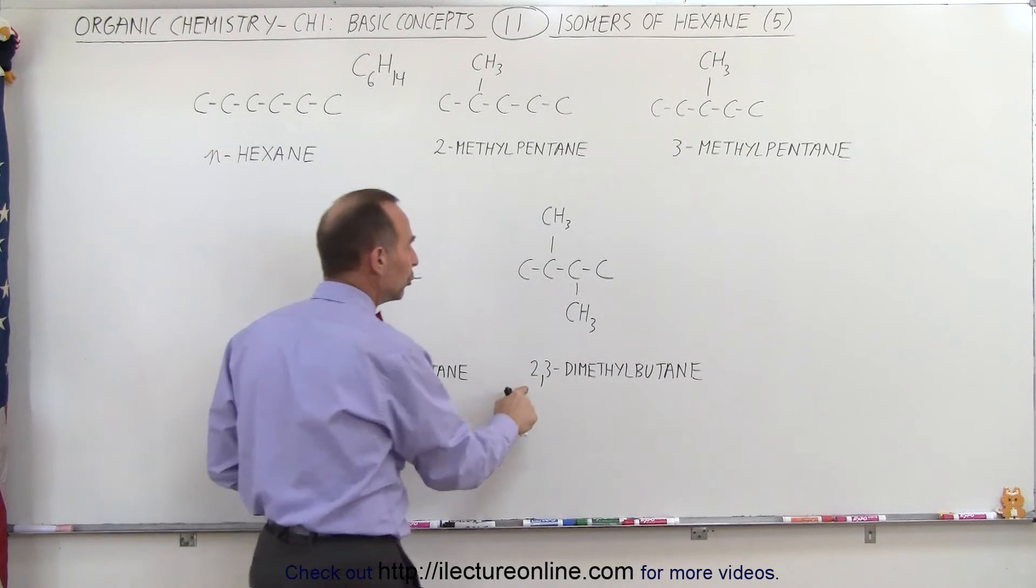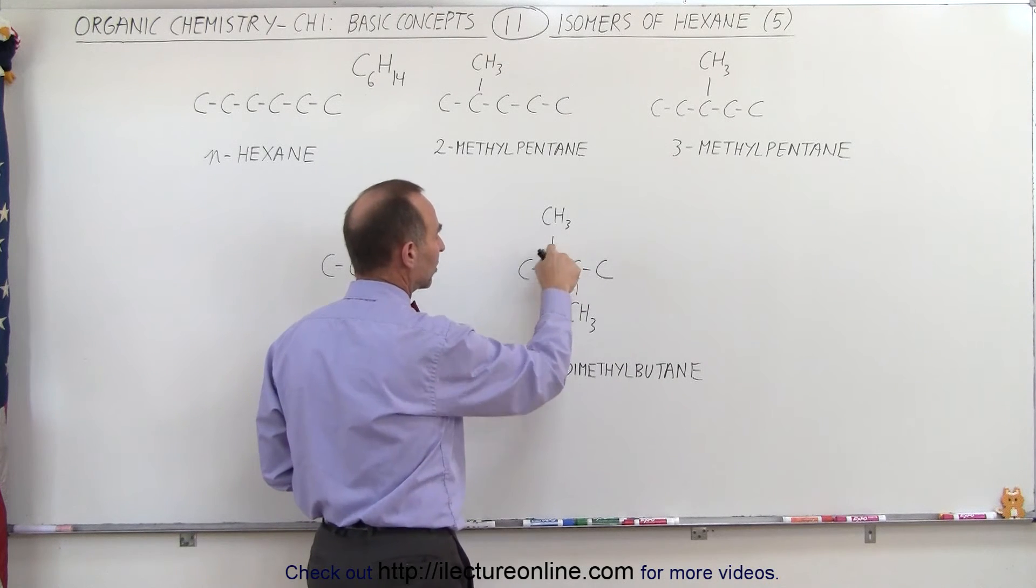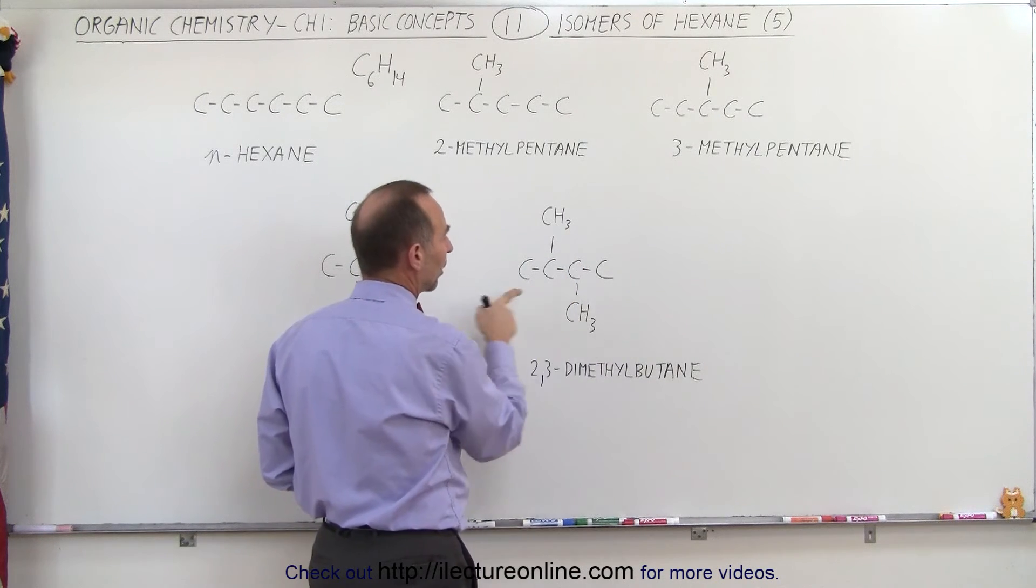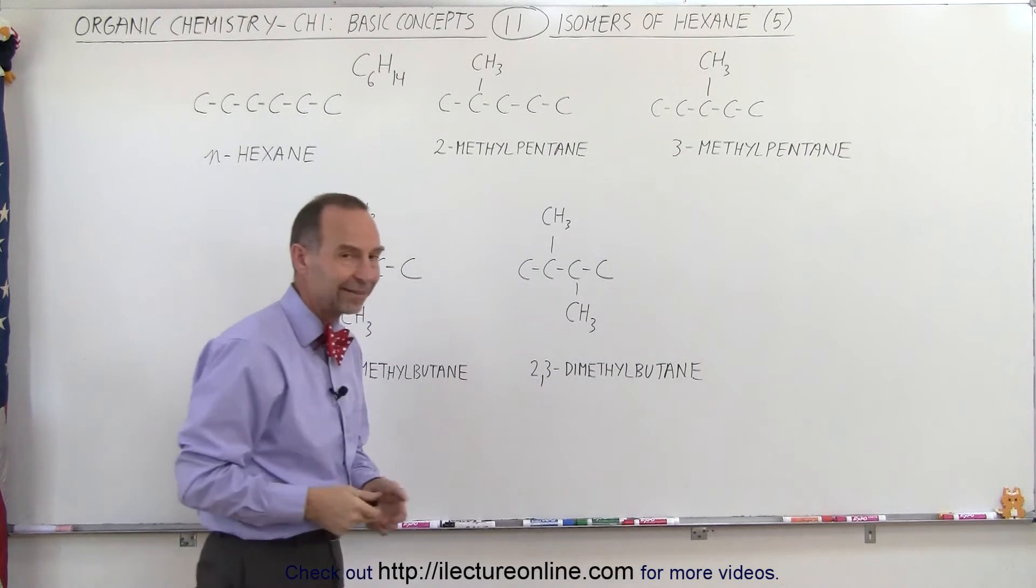Here we have what we call 2,3-dimethylbutane, because one of them is connected to the second carbon, and one of them is connected to the third carbon. Regardless if you start counting from the left, or start counting from the right, you get the exact same result.